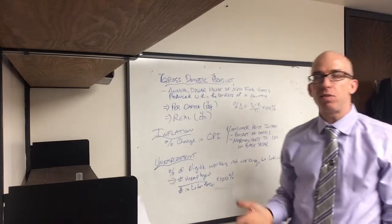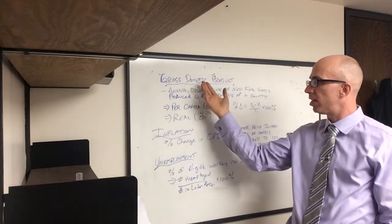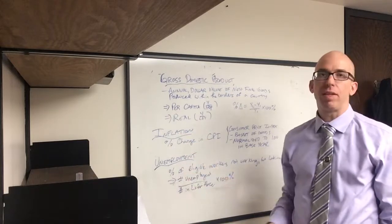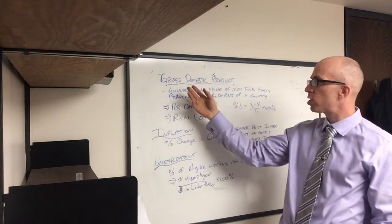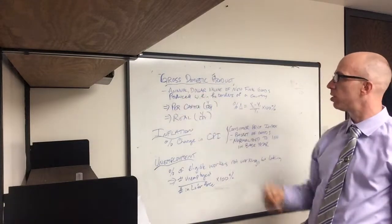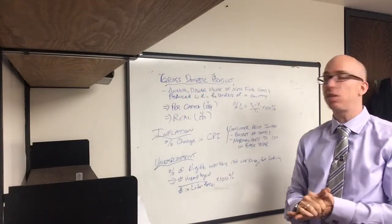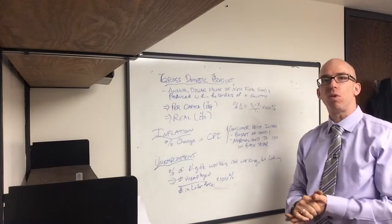These are reported periodically. Gross domestic product is quarterly or yearly, inflation and unemployment can be monthly, but these are the three main measurements to measure the health of the economy. First of all, gross domestic product is the annual dollar value of new final goods and services produced within the borders of a country.